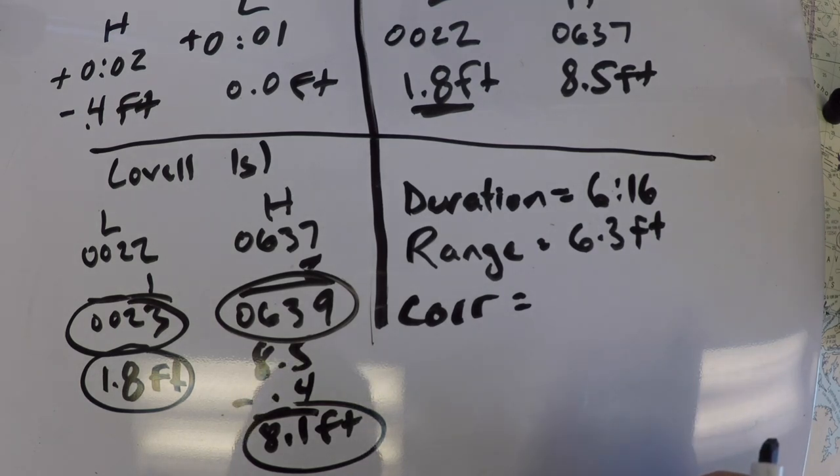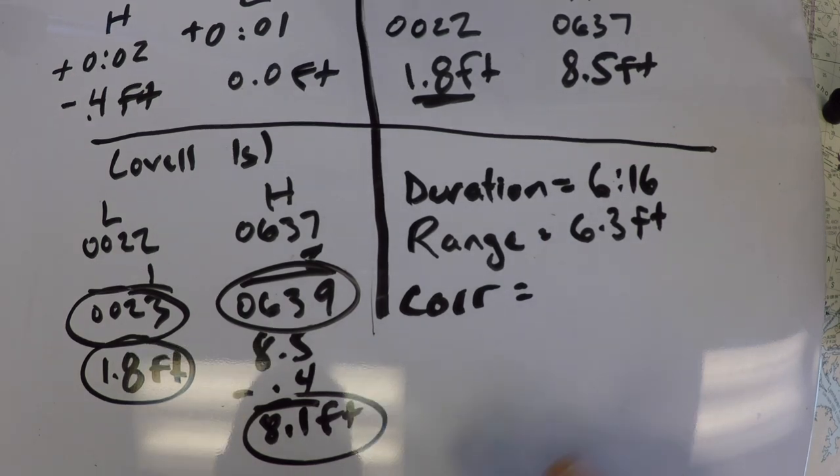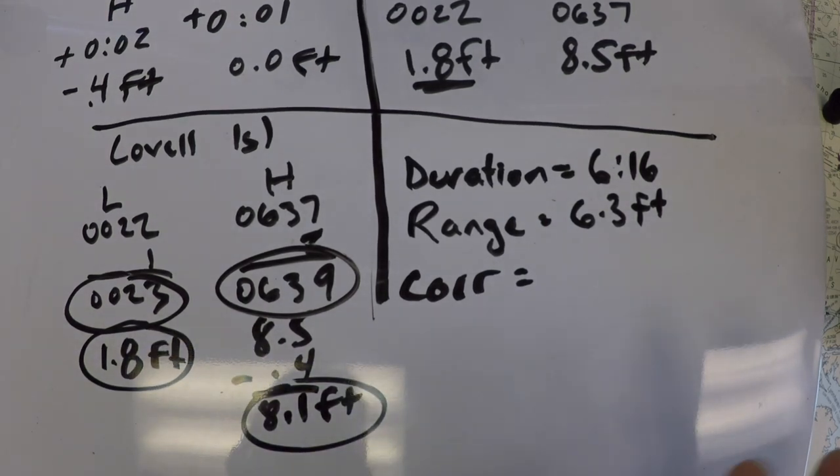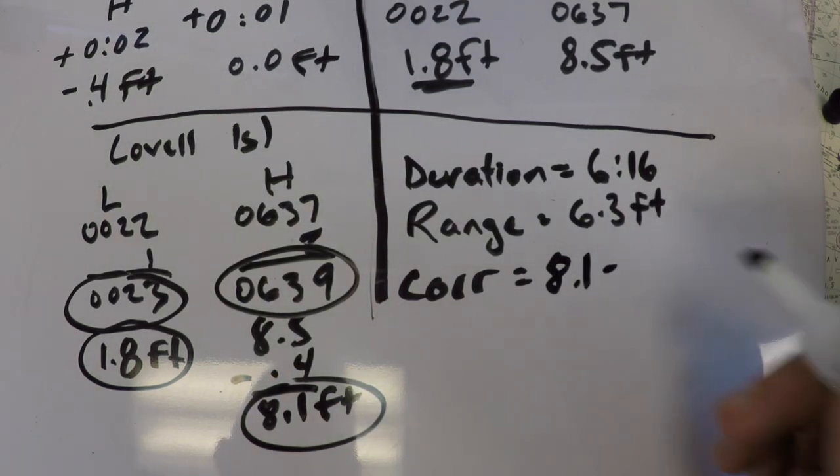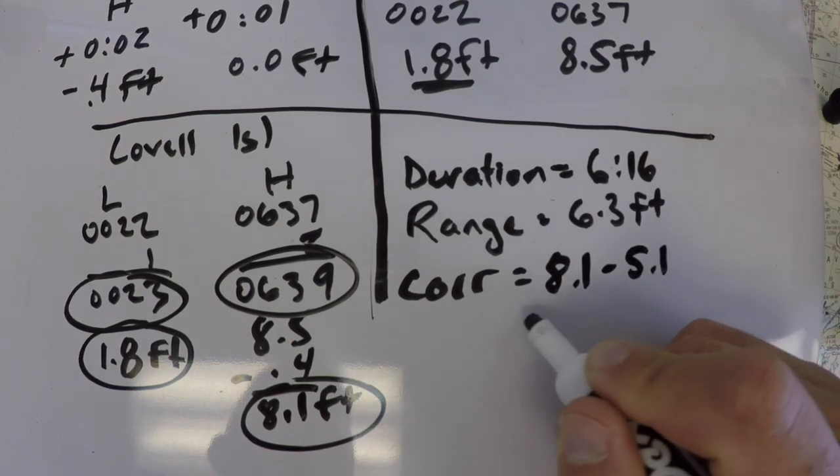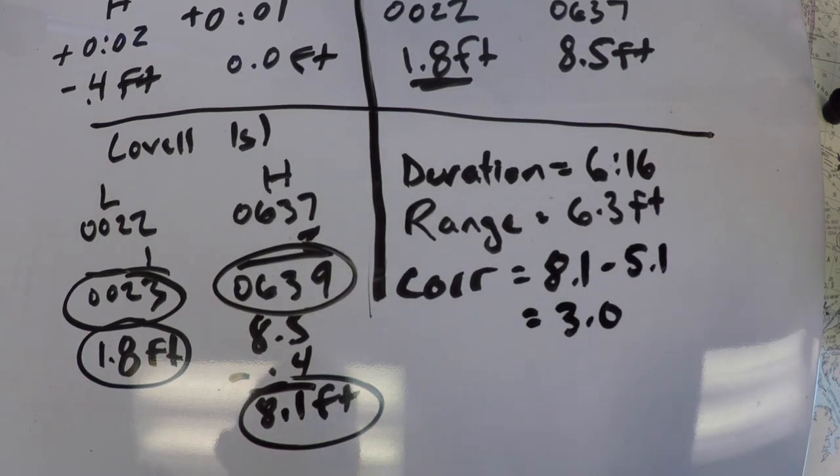what we can do is we can take our either our low or our high, and I'm going to choose the high in this case. If we take 8.1 feet minus the 5.1 datum, we end up with a correction of 3.0 feet.